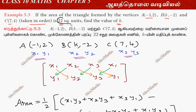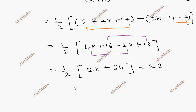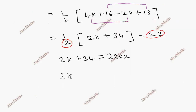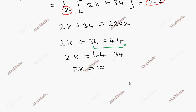The area value is 22 square units. So we equate: 22 equals one-half times (2k plus 34). Multiply both sides by 2: 2k plus 34 equals 44. Therefore 2k equals 44 minus 34 equals 10, so k equals 10 divided by 2, which is 5.